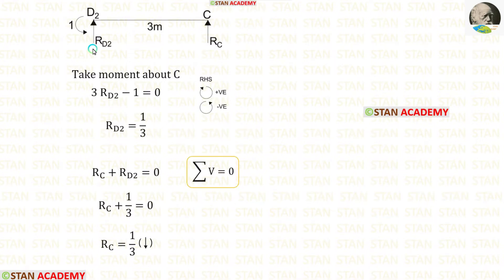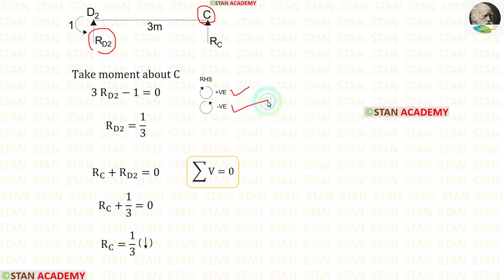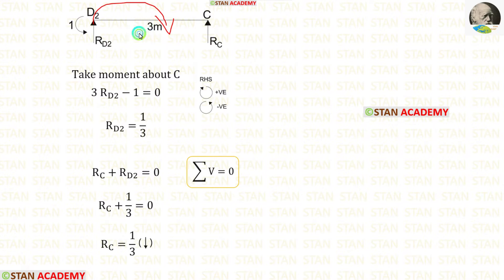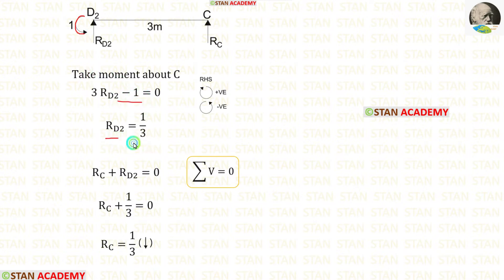First, I am going to calculate RD2. For that, I am going to take moments about C. In this case, I am moving towards the right-hand side, so clockwise will be positive and anticlockwise will be negative. RD2 is acting towards point C in the clockwise direction, so it will be positive and the distance is 3, giving 3·RD2. The unit moment is acting in the anticlockwise direction, so it will be negative. Finally, we are getting RD2.